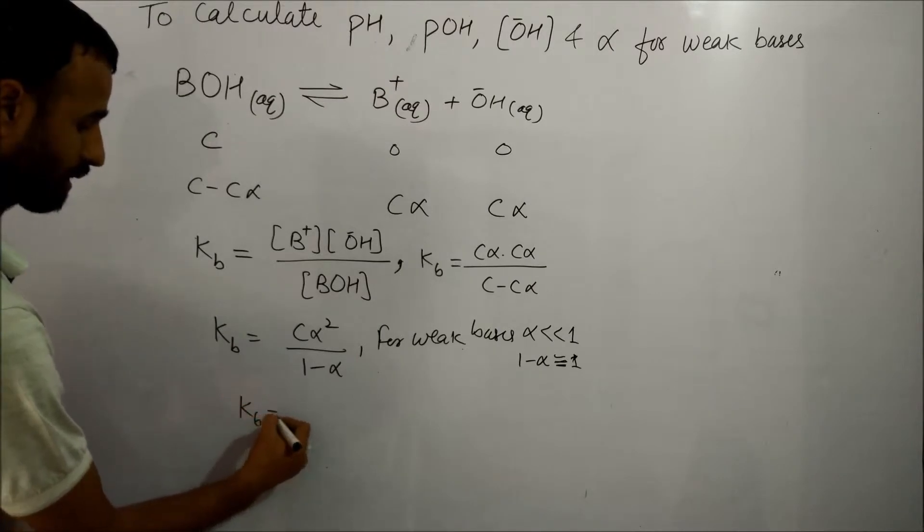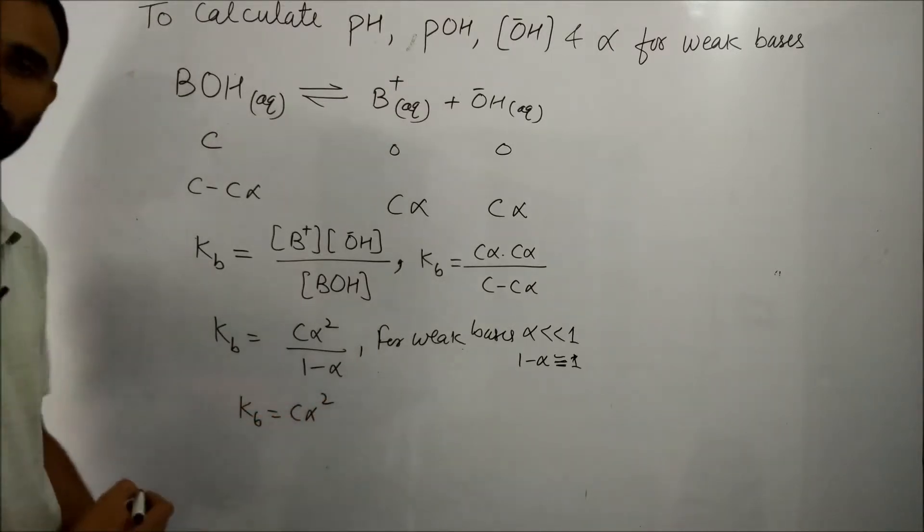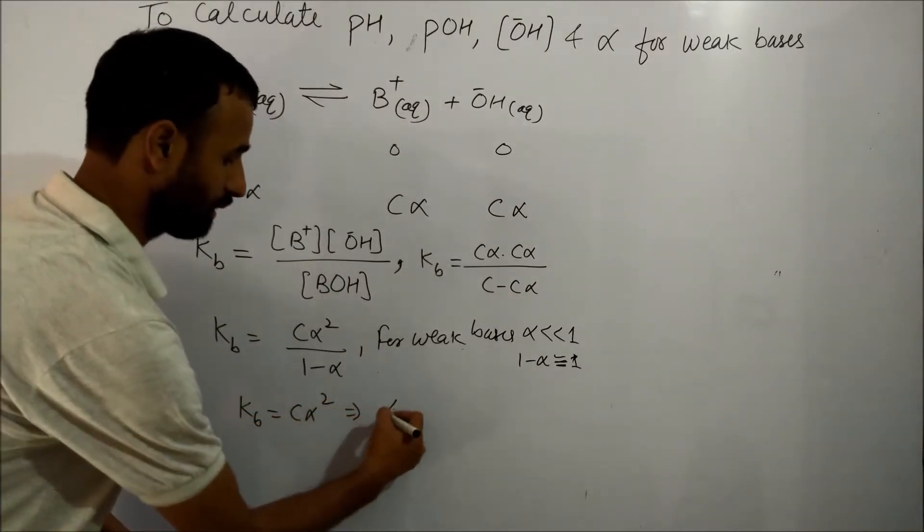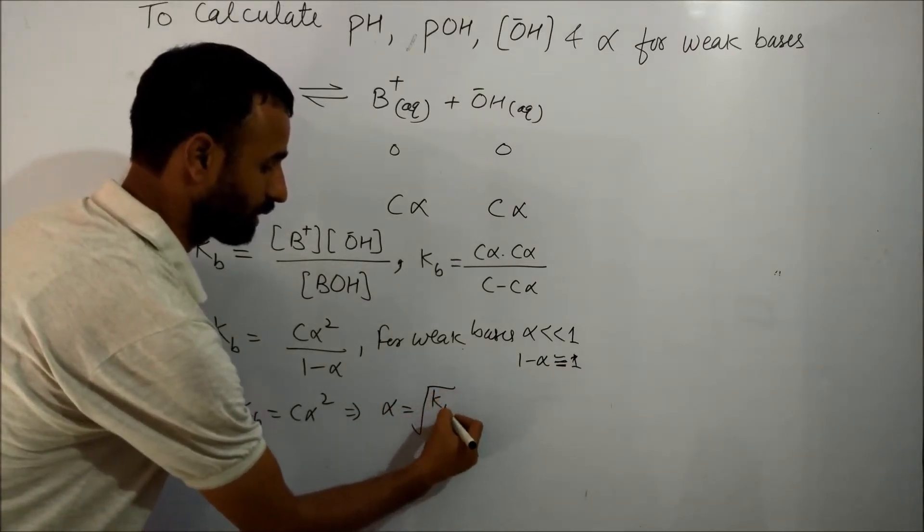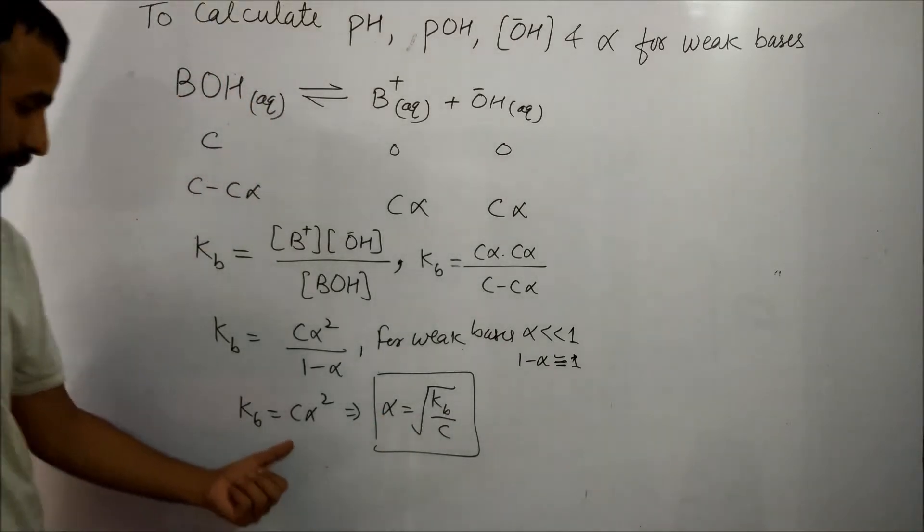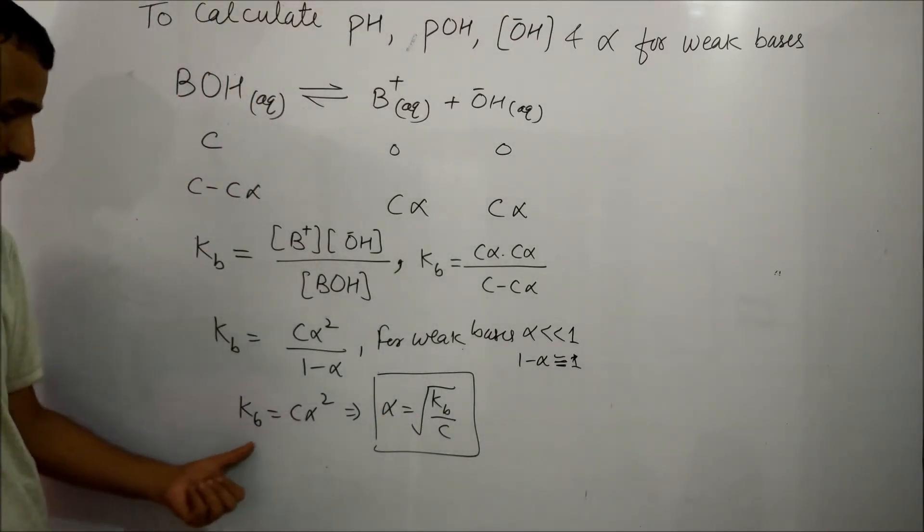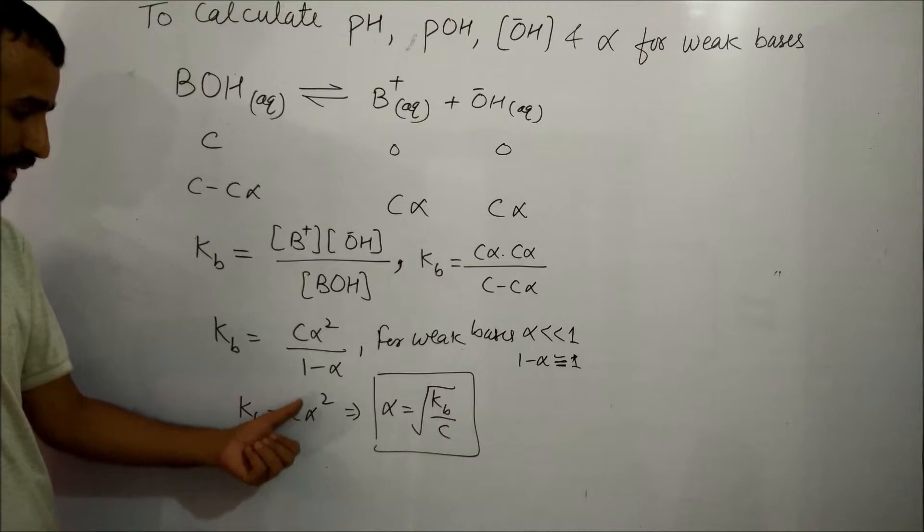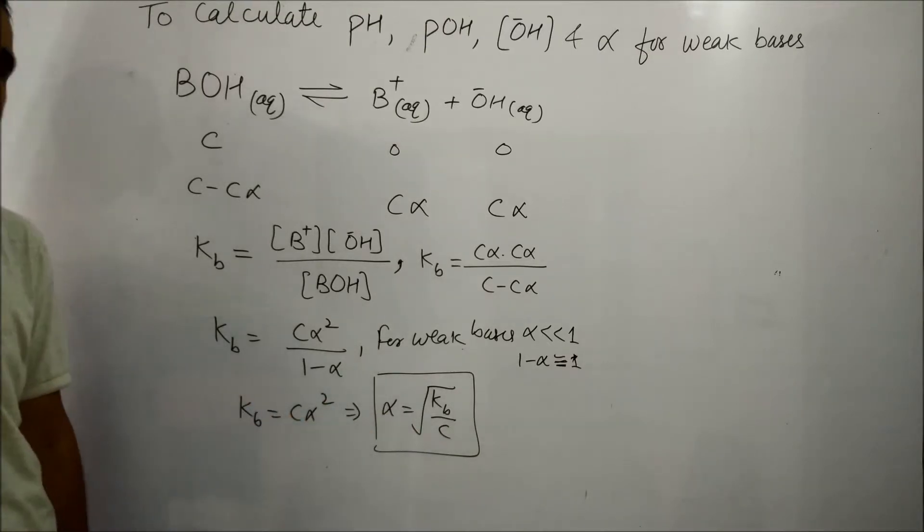So KB becomes equal to C alpha squared, and alpha is equal to the square root of KB by C, because alpha squared is equal to KB by C and alpha is the square root of KB over C.